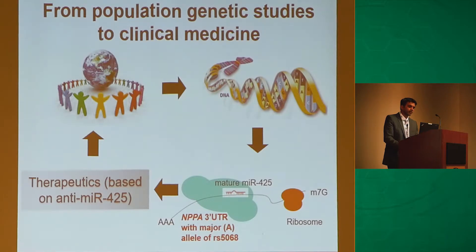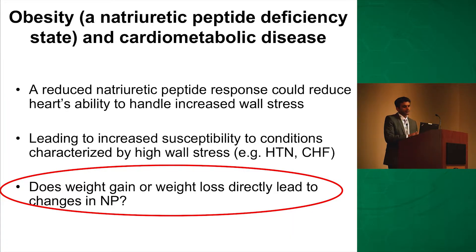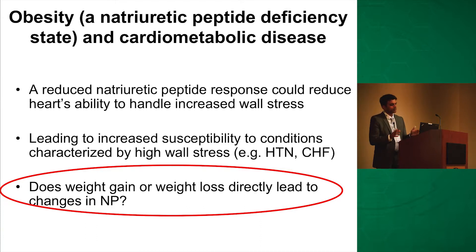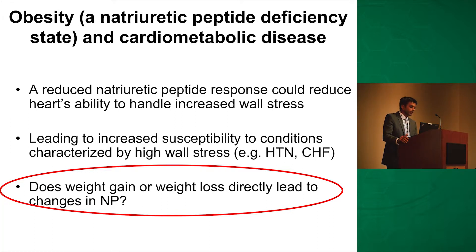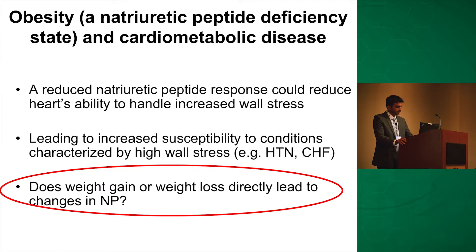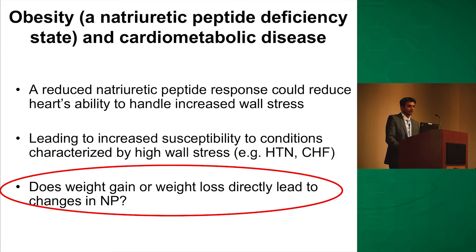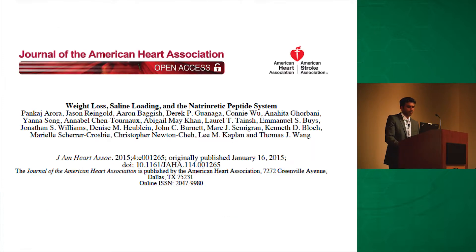I'm going to change completely from genetics as deficiency. As Dr. Wang mentioned this morning, other than genetics, obesity is also a well-known natriuretic peptide deficiency state. We wanted to design a human protocol to address this — the study was designed to see whether weight gain or weight loss could directly lead to changes in natriuretic peptide levels. This work was published in 2015.